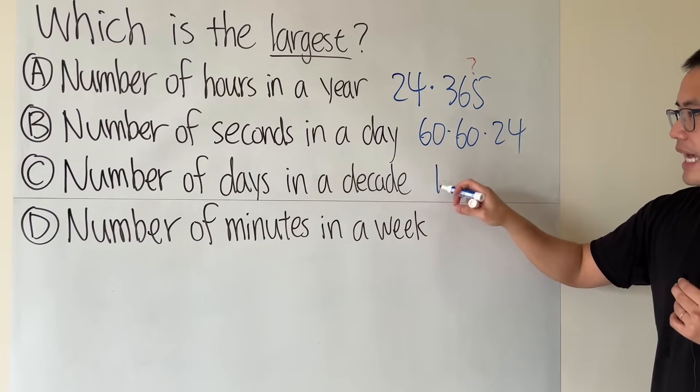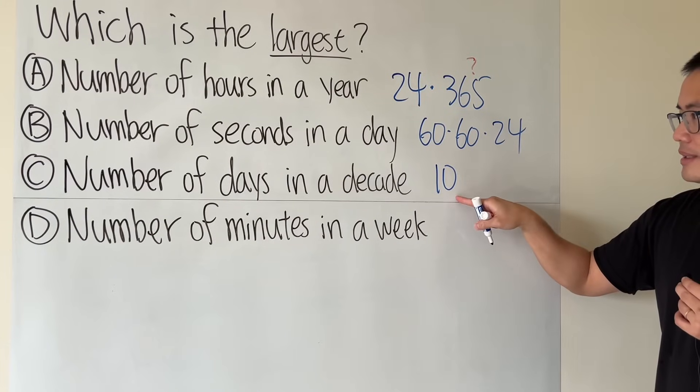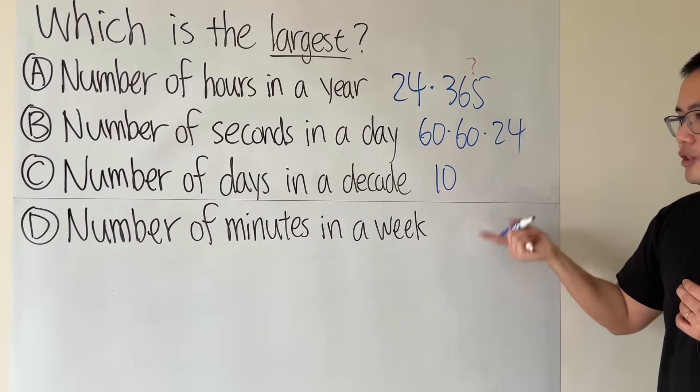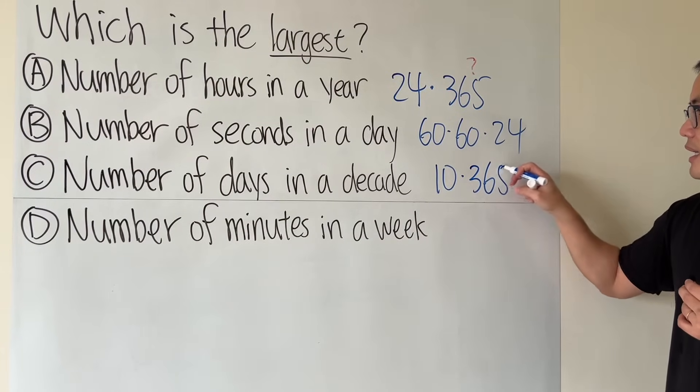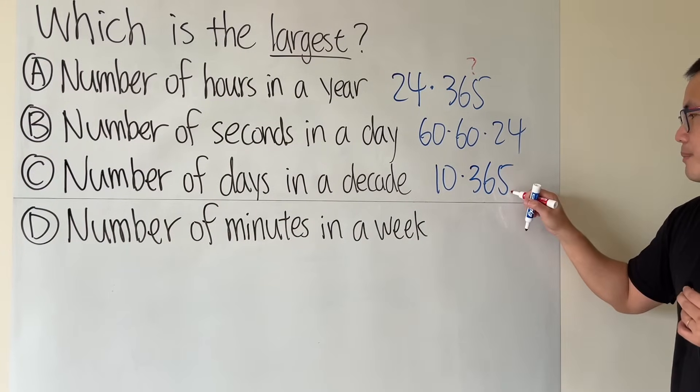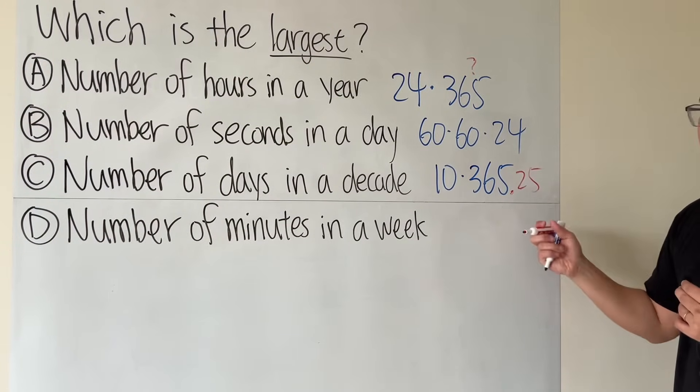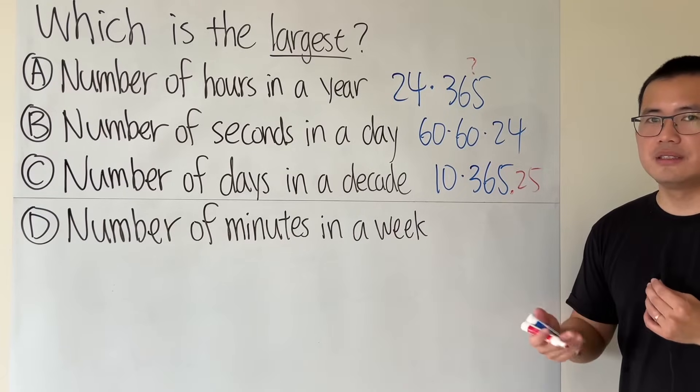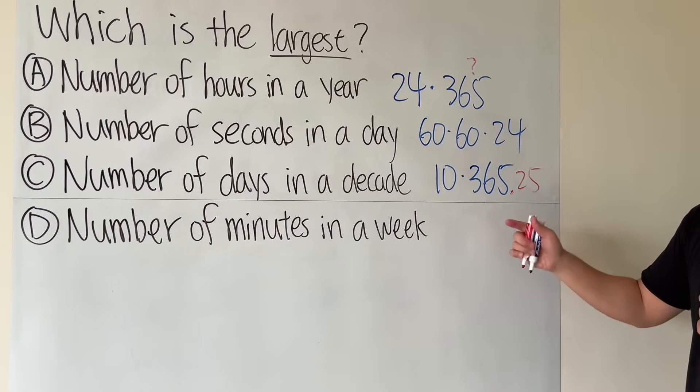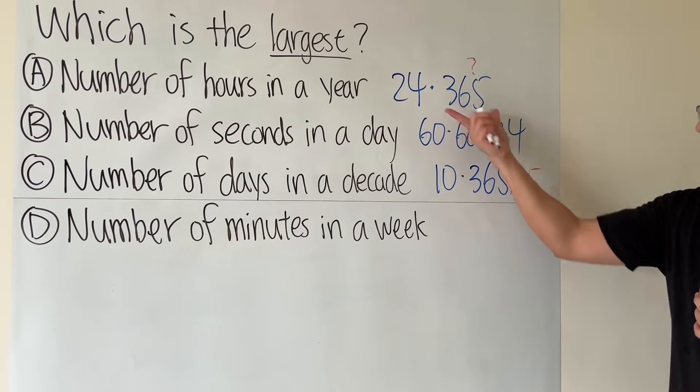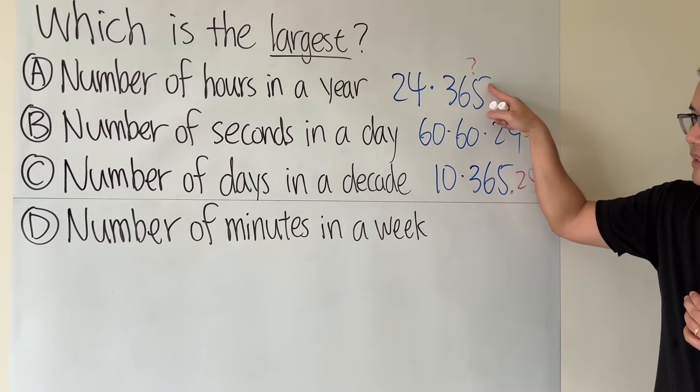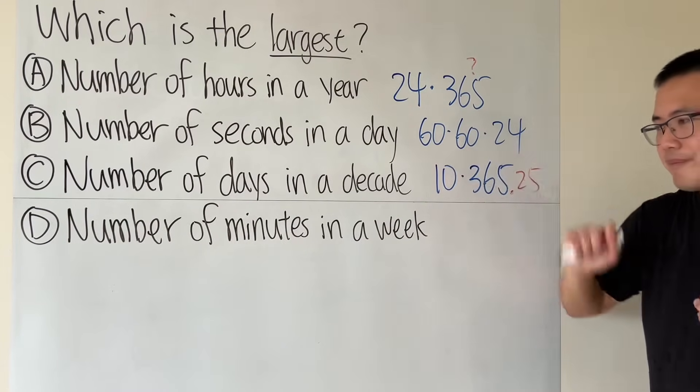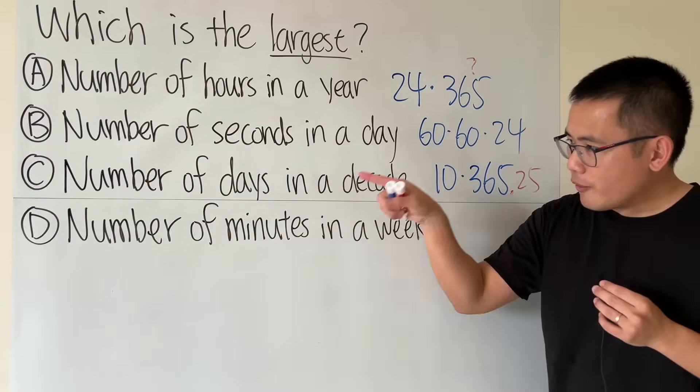Then for this one, because we have 10 years in a decade and each year has 365 days, but technically 0.25 because every four years there is the leap year, right? But now if you compare this and that, this is bigger than this but this is bigger than this, so this is the biggest for now. Finally, number of minutes in a week.